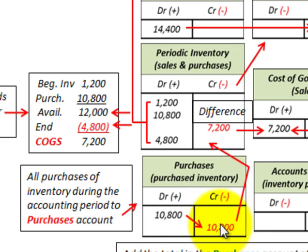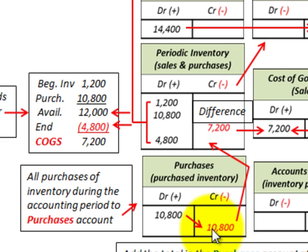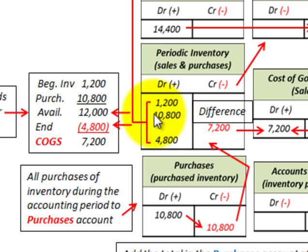At the end of the period, when we calculate our inventory costs, we credit out the total purchases for the period, reducing the purchases account to zero. We credit $10,800 in our purchases account, and the debit amount is moved into the periodic inventory account for $10,800.